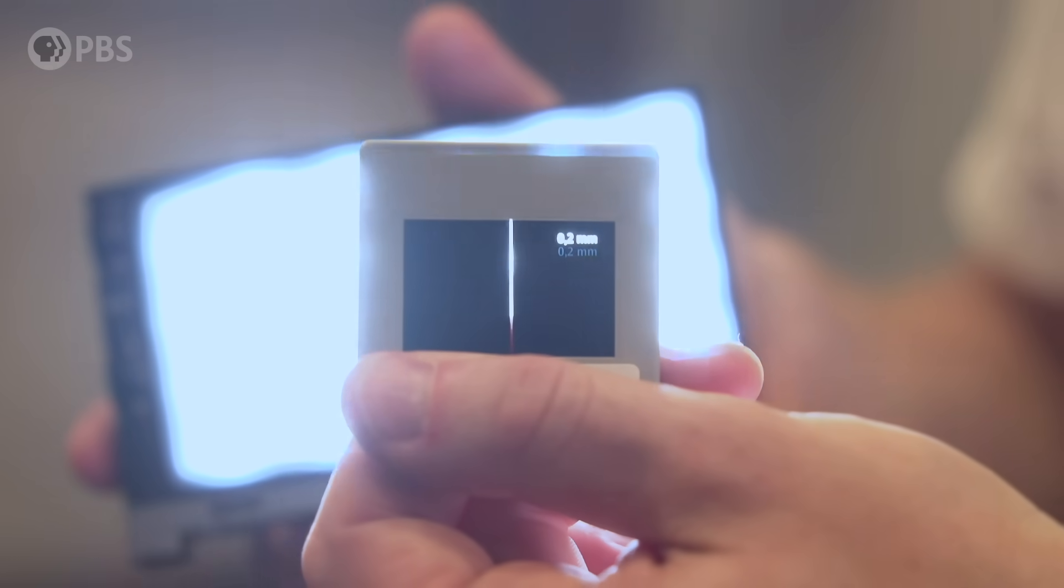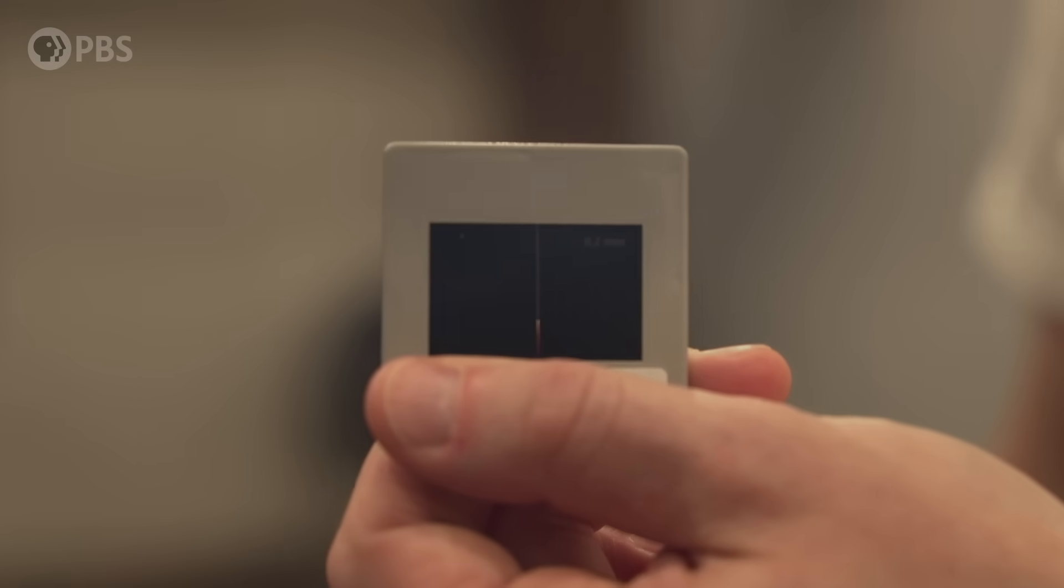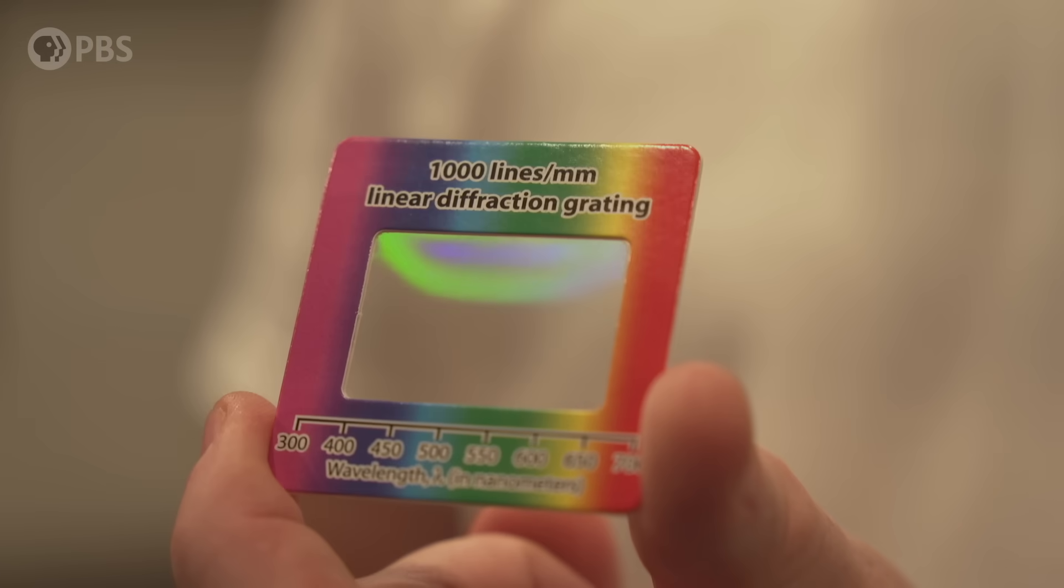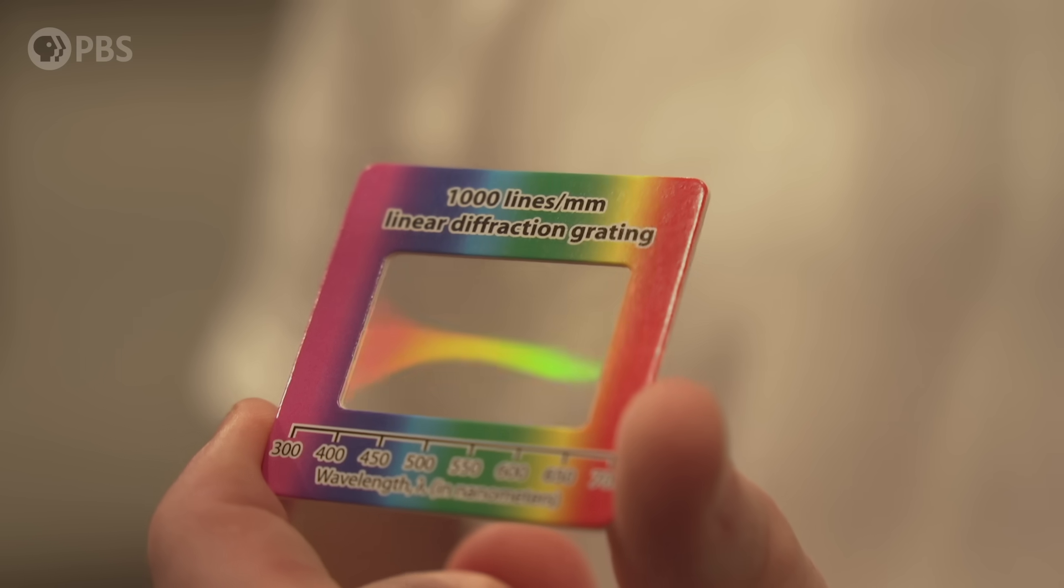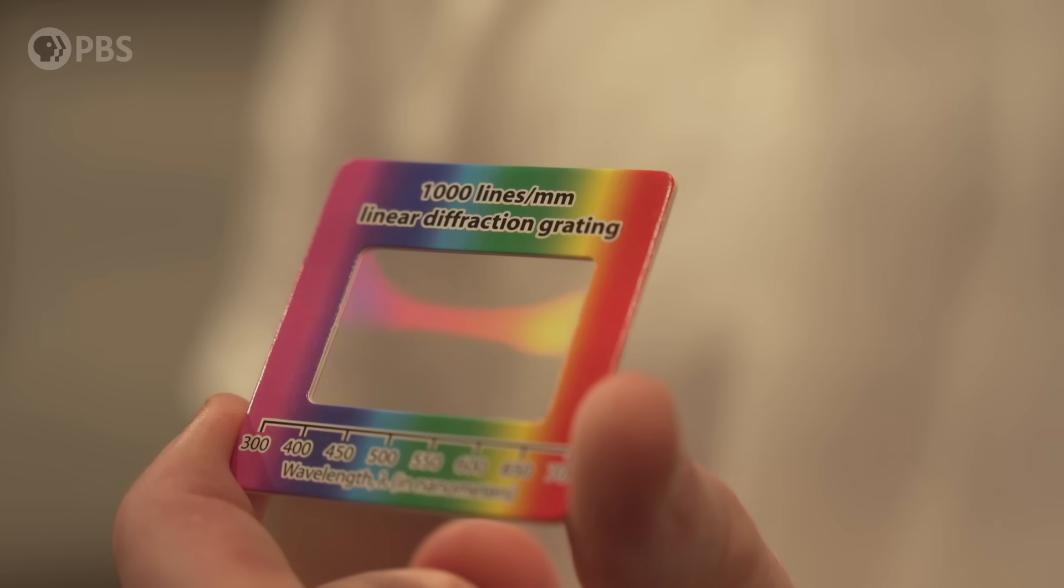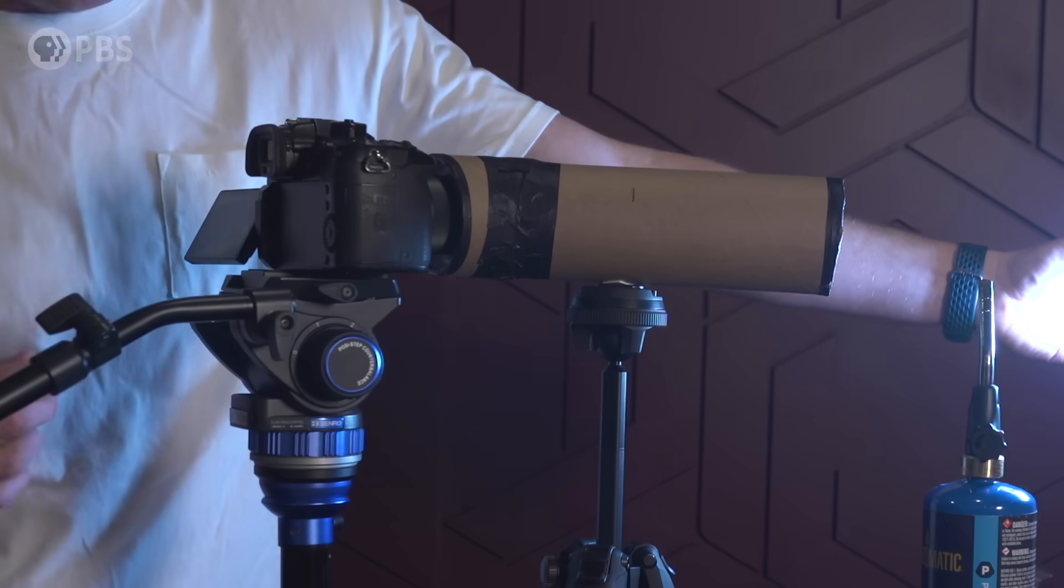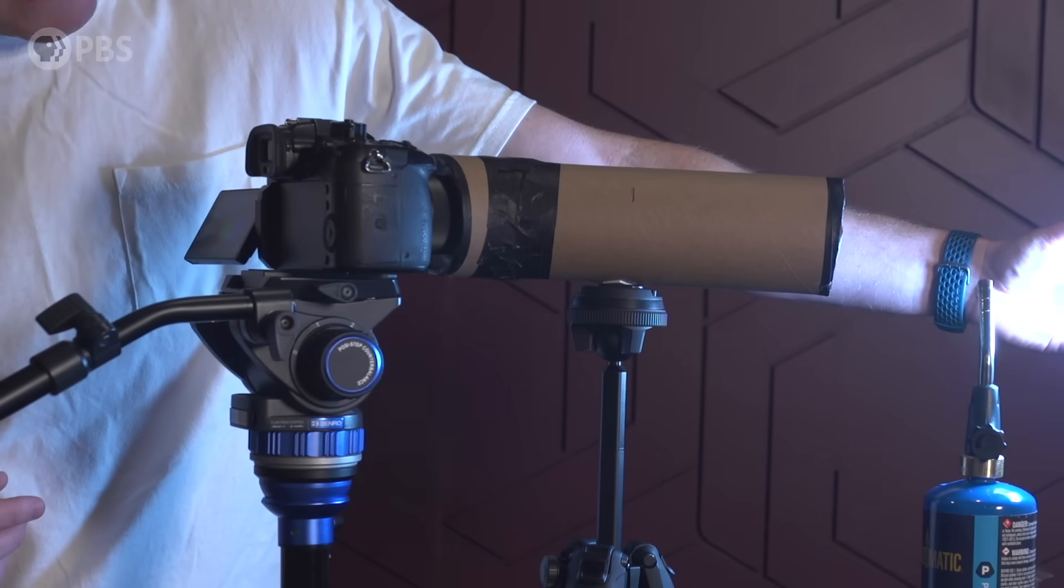So here I have an opening for the light to go in, passing through a tiny little slit which will help make everything look sharper. Then instead of a prism, I'm using something called a diffraction grating, which uses tiny little grooves to split light into all of its individual wavelengths. Just put a camera right here and you can see it too.